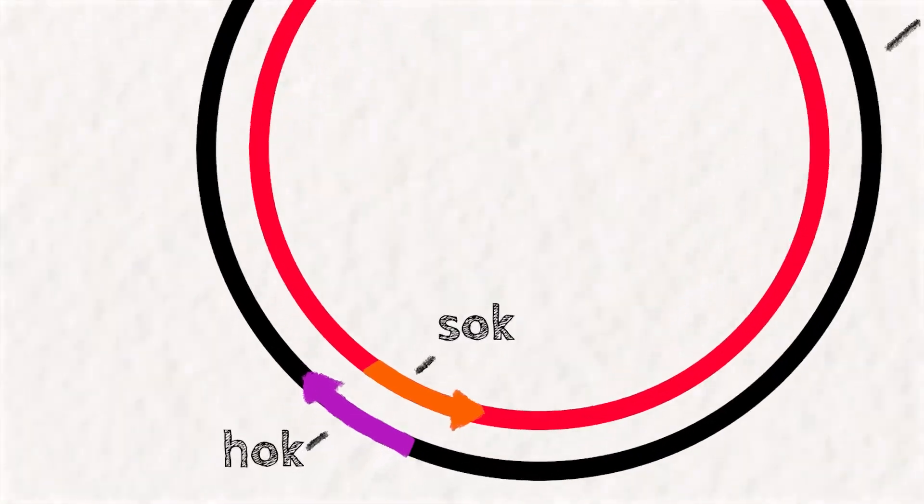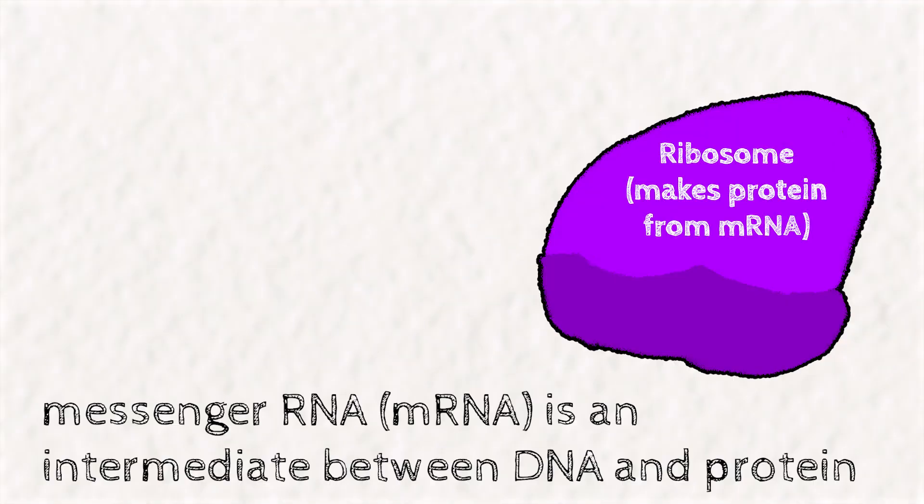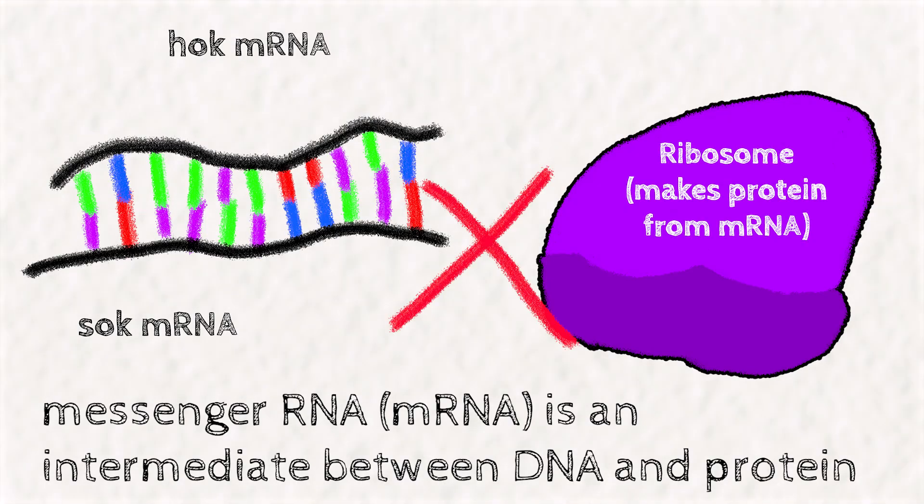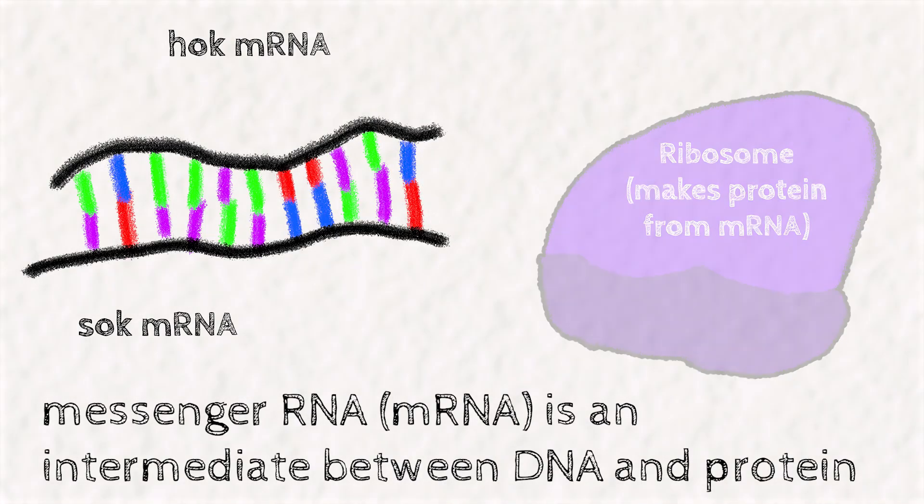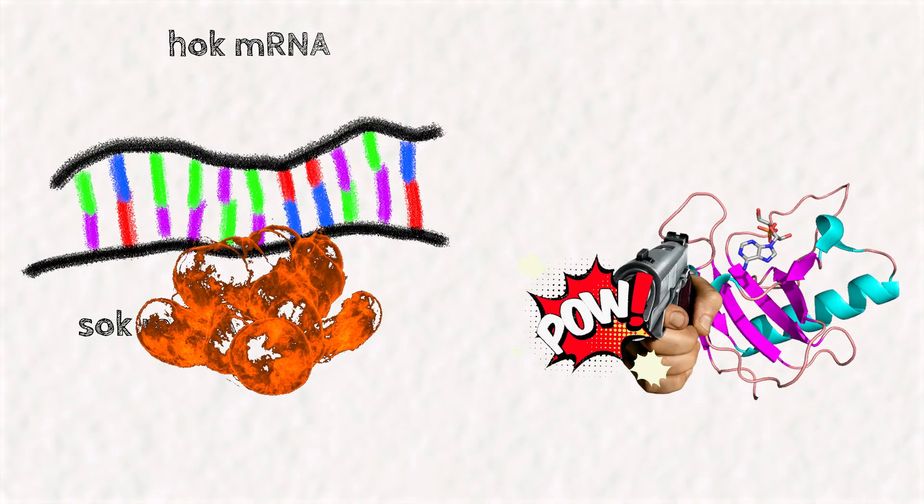The SOC gene encodes for an mRNA that prevents the toxic HOC protein from getting made by binding the HOC mRNA, preventing it from entering the ribosome, the protein factory of the cell. This double-stranded RNA is then recognized and destroyed by RNA-degrading enzymes, called RNases, to stop the HOC mRNA from ever being made into protein.